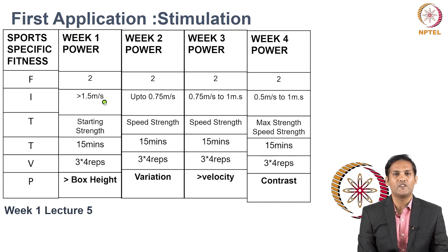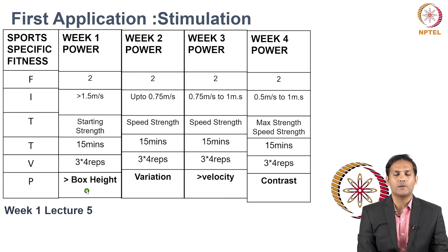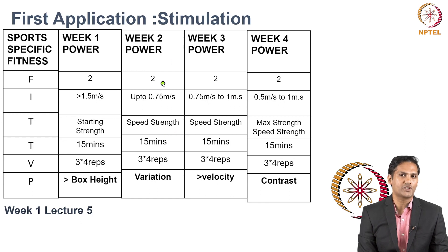The first application of FITTVP is stimulation, which can be recorded in the P section of FITTVP. In week one, I gave stimulation by increasing the box height. In week two, I gave stimulation by changing the type of stimulation — in week one it was starting strength, and in week two it is speed strength. So I gave stimulation in terms of variation.